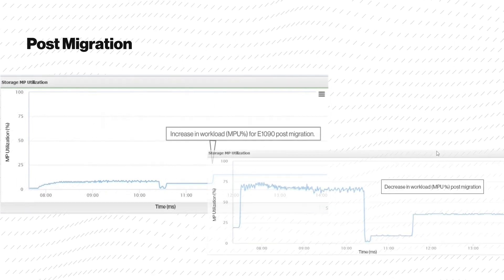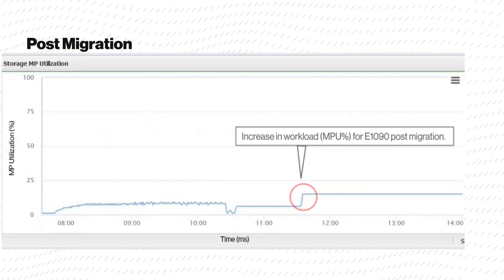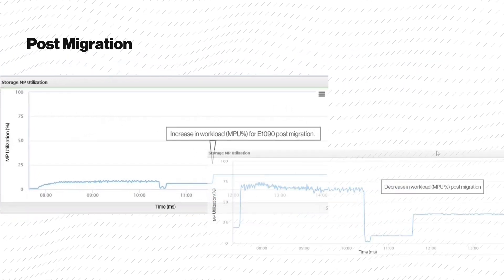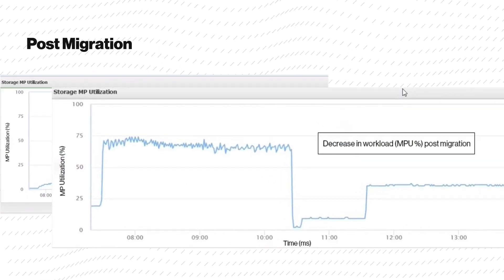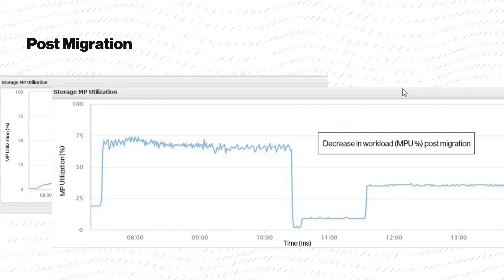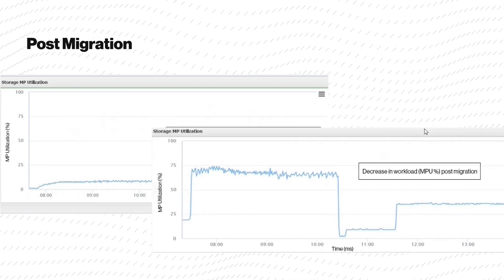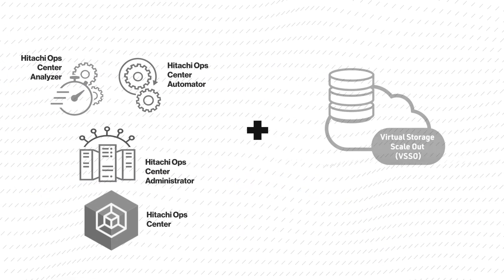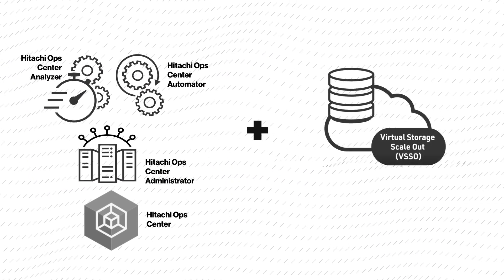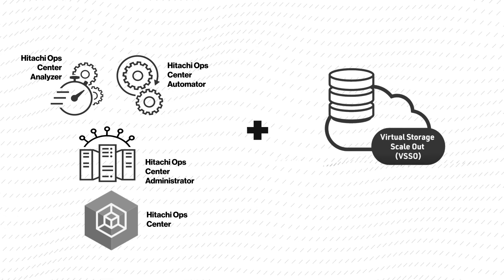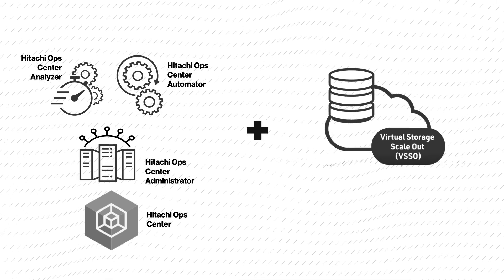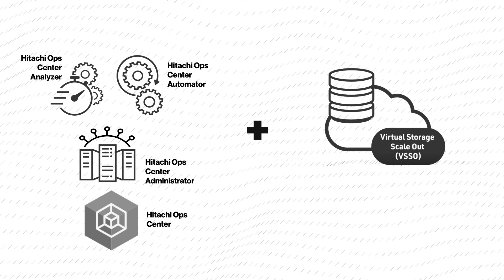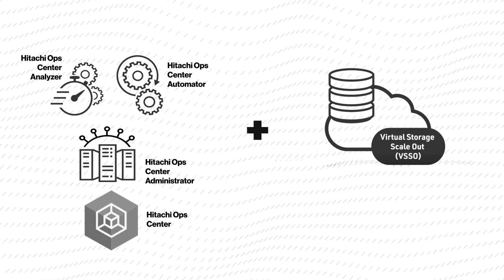After the migration, the workload is balanced because the VSP-E1090 storage system now has an increased load. The older VSP-E590 storage system has a reduced load and can either be used for other applications or released as part of legacy array lifecycle management. Using Hitachi Ops Center along with VSSO provides a simple way to approach workload management and migration in your storage system environment, and it can also be used in conjunction with legacy array lifecycle management.